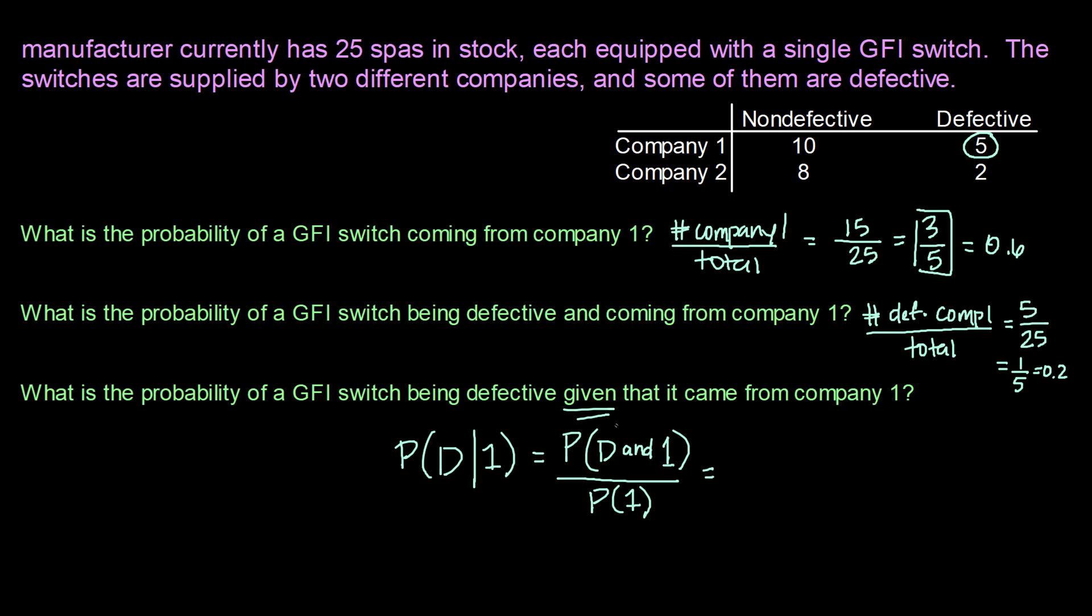So the probability of being defective and coming from company 1, well, we just found that to be 1 out of 5. So 1 out of 5 is our probability of being defective and from company 1. Our probability of coming from company 1, we found that up here to be 3 out of 5. So we can place that probability here. Simplifying this complex fraction, that would be 1 out of 5 times 5 out of 3. So we would flip the bottom fraction to multiply. Our 5's would reduce and we would get a probability of 1 third or in decimal form 0.3 repeating. So the probability of a GFI switch being defective given that it came from company 1 is 1 out of 3.